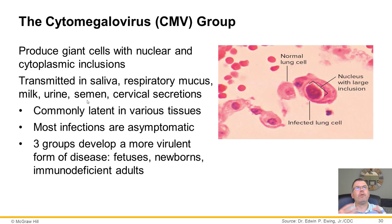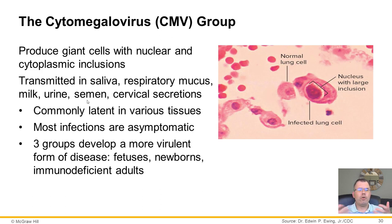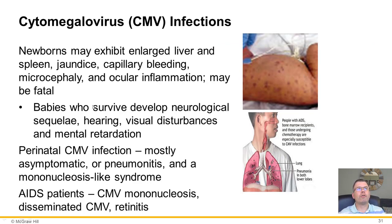The cytomegalovirus (CMV) produces giant cells with nuclear and cytoplasmic inclusions and spreads through various body fluids. It is commonly latent in numerous tissues, and most infections are asymptomatic — this is one of those silent viruses many people get and never know they had. However, those without a well-functioning immune system — including fetuses, newborns, and immunodeficient adults — may develop more severe disease including enlarged liver, spleen jaundice, capillary bleeding, microencephaly, and ocular inflammation. It can be fatal in very young populations, and surviving babies may have neurological sequelae, hearing and visual disturbances, and intellectual disability.